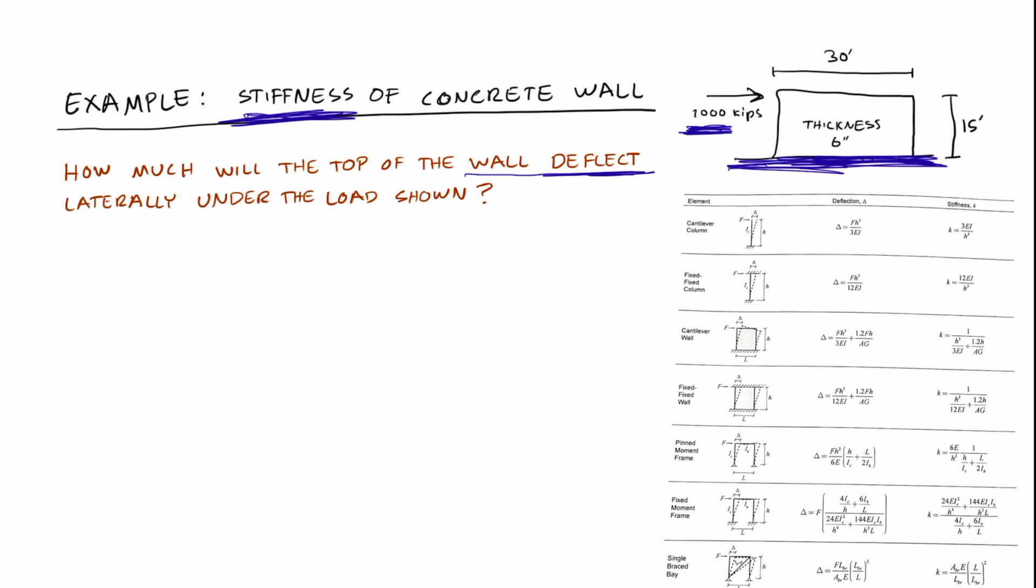Here we have a table of the different formulas for deflection and stiffness. This is a cantilever wall because it's only attached to the bottom, and the top is free to move. So we have a cantilever wall, and here are the two equations that we could use.